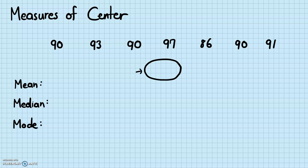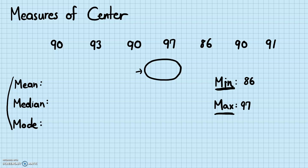Before I go into these measures of center, I would also like to bring to your attention the minimum and the maximum. The minimum is the smallest data — in this set that's 86 — and the maximum is 97. Each of the measures of center needs to be in between the minimum and maximum, or sometimes equal to them. If your mean, median, and mode are less than the minimum or bigger than the maximum, it means you've done something wrong in your calculation. So these are good boundary points to make sure your answers don't stray into some weird number.